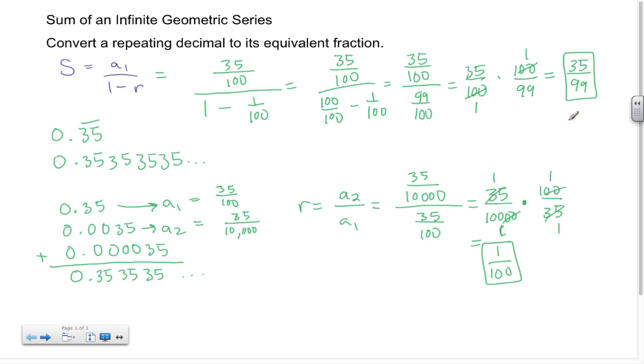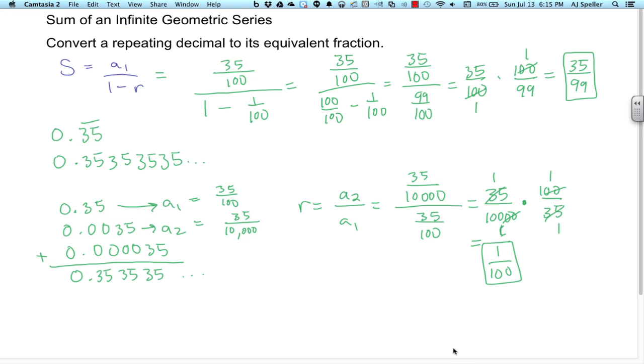What I want to do next is pull up the calculator and prove that 35 divided by 99 gives me this decimal of 0.35 repeating. So with the calculator...